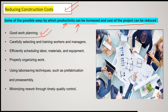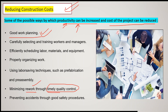Minimizing rework through timely quality control is very important. If you can control the quality of labor, material, and construction work, any damage can be avoided and rework can be avoided. Preventing accidents through good safety procedures is also a necessity at the site, because if a single accident happens it can delay the project. As the project is delayed, the duration increases and ultimately it affects the cost of the project.